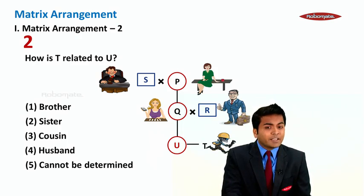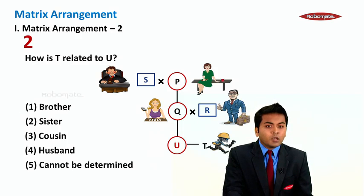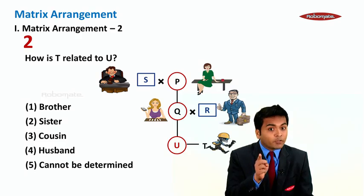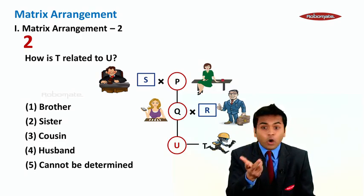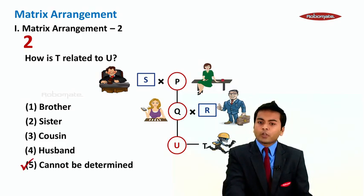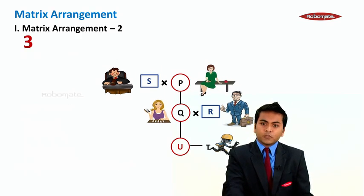How is T related to U? Now, T and U are siblings, but we don't know gender of T. And hence, how is T related to U? It can be brother or sister, so cannot be determined. The third question.